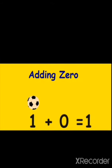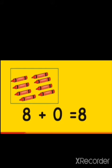Here we can see that when we add 0 to a number the number remains the same. In this picture we have 8 crayons. 8 plus 0 is equal to 8. Thus it is clear that when we add 0 to a number the number remains the same.